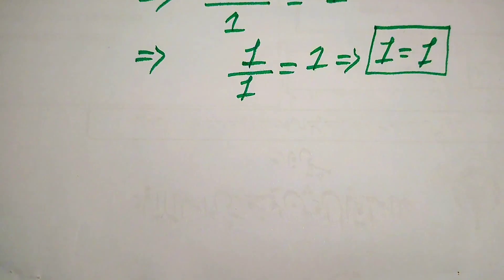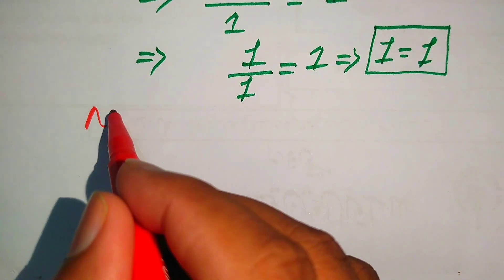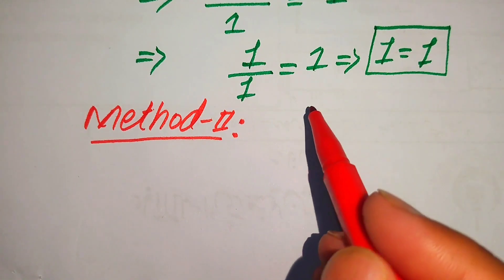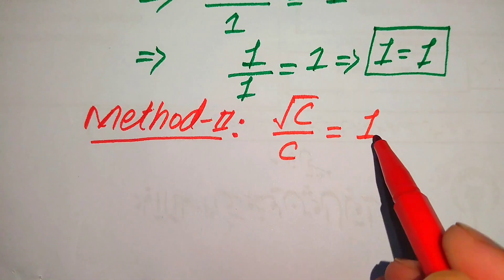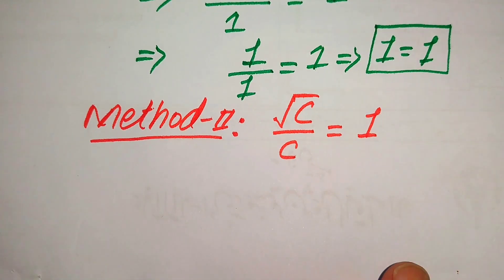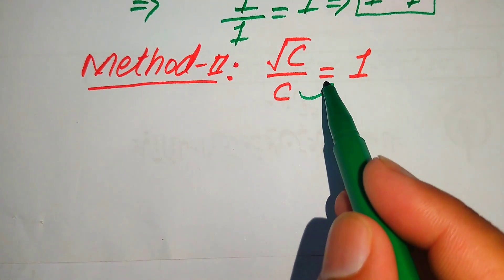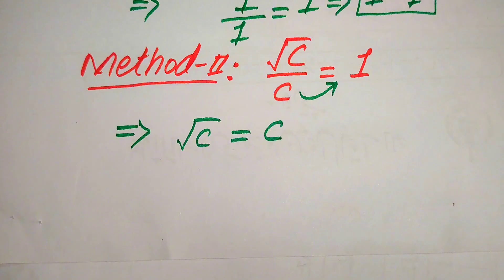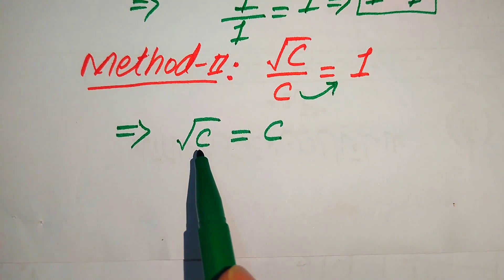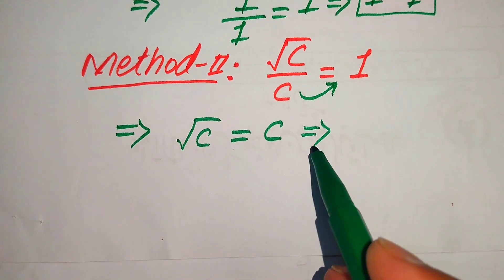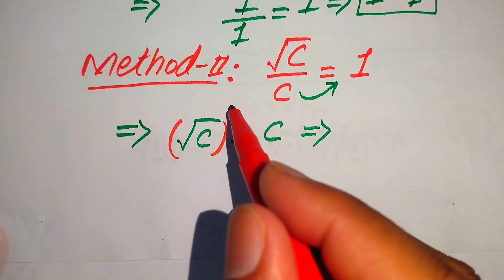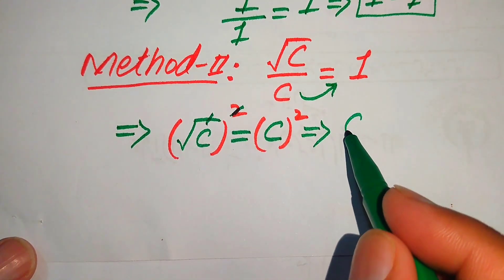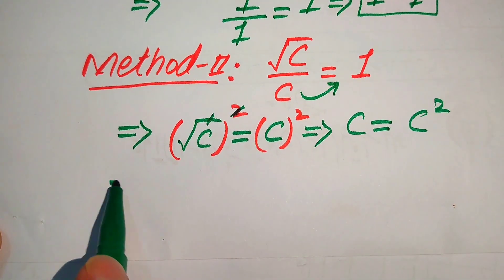Now we solve the problem using the second method. The given equation is square root of C divided by C equals 1. We move C to the right hand side, giving us square root of C equals C. To remove the square root from the left hand side, we square both sides. The square and square root cancel on the left, giving us C equals C squared.